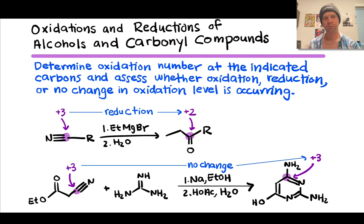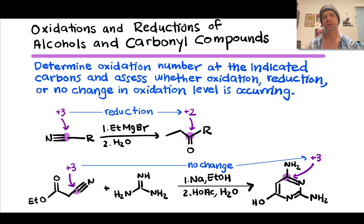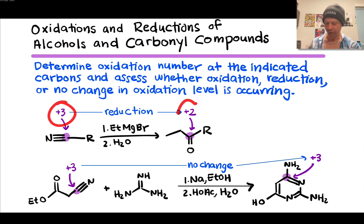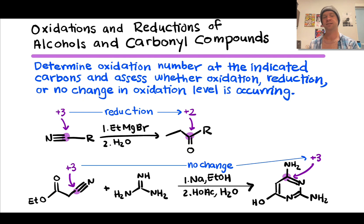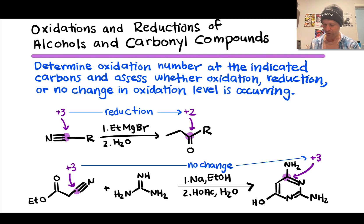Big takeaways from this problem: in assigning oxidation numbers, we systematically follow the process of giving all bonding electrons to the more electronegative heteroatom in the bond, then look at the resulting formal charge. Reduction corresponds to a decrease in oxidation number; oxidation to an increase. And for many reactions, we see no change in oxidation number — those processes are sometimes called redox neutral.